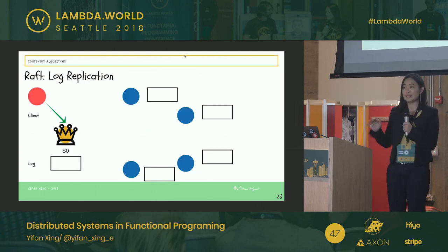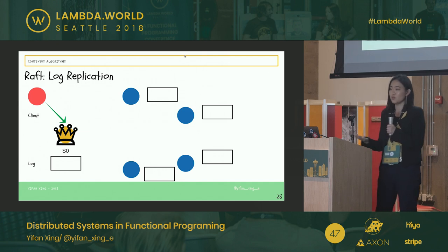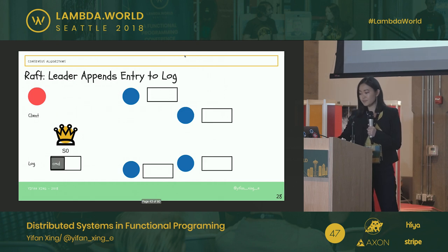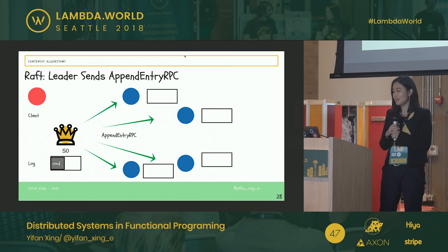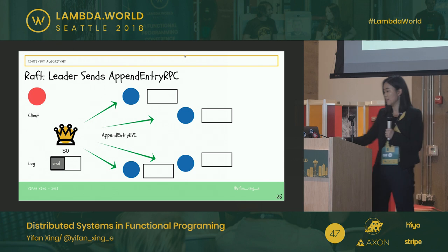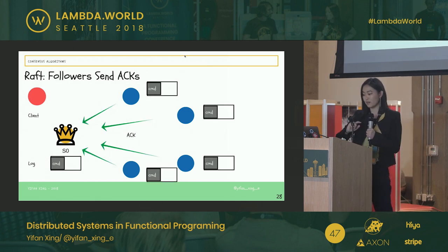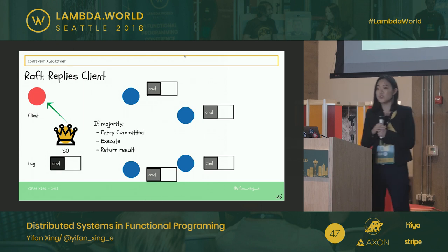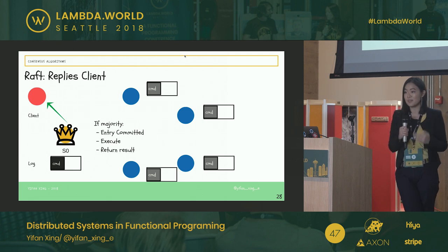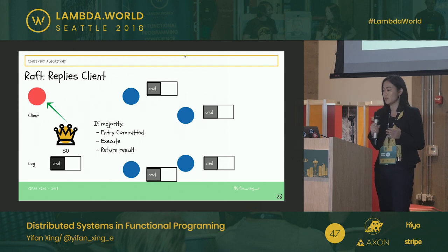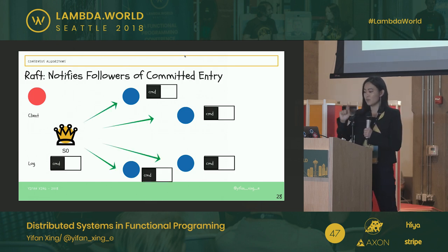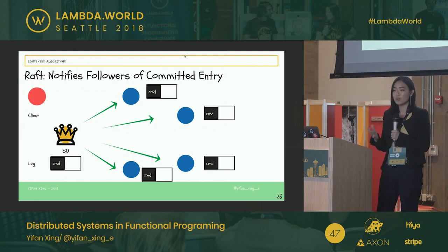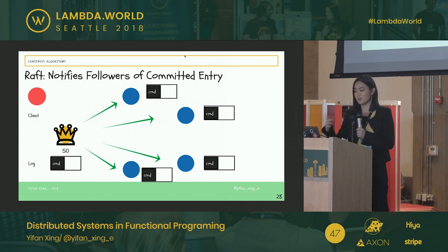Now let's look at log replication — the second phase. A client sends a command to the leader. The leader appends this command to its own log entry and sends append entry remote procedure calls to the other machines, saying it has appended this entry and asking them to do the same. The other machines send acknowledgments back to the leader. If we get a majority of responses, it's safe to commit the current entry — meaning it's safe to execute it and return the result to the client.